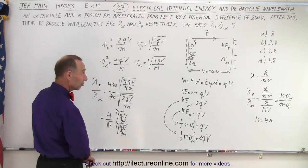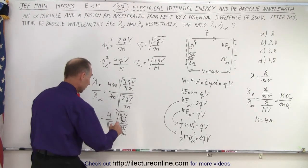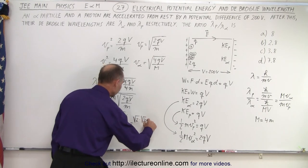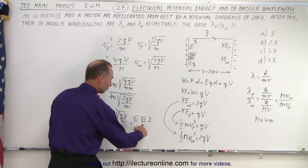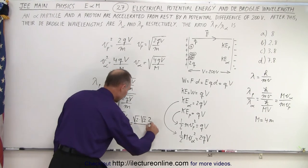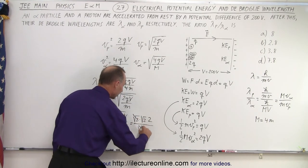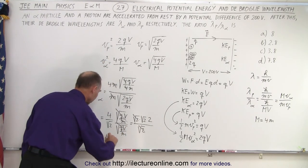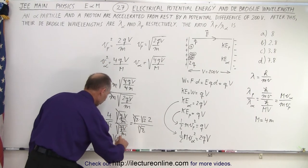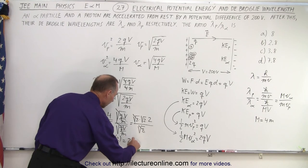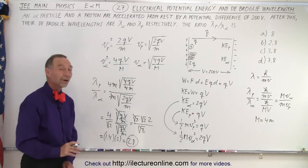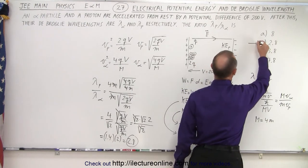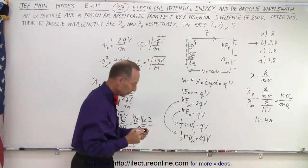Looking at the answers, we manipulate 4 divided by the square root of 2. We can write this as the square root of 2 times the square root of 2 times 2, divided by the square root of 2 — the square roots of 2 cancel, leaving 2 times the square root of 2, which equals approximately 2 times 1.4, or 2.8. That's answer B, the correct answer for this problem.